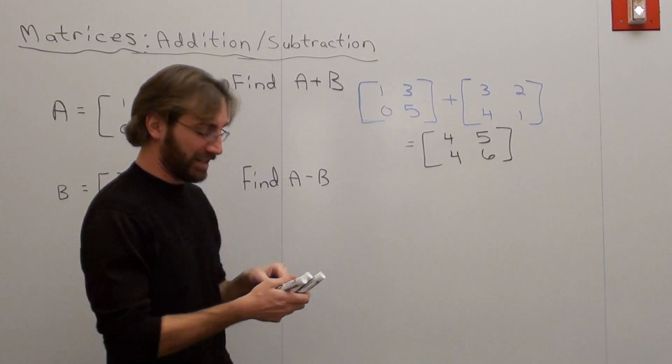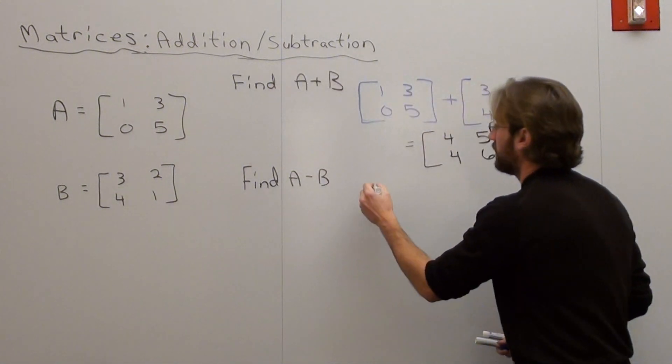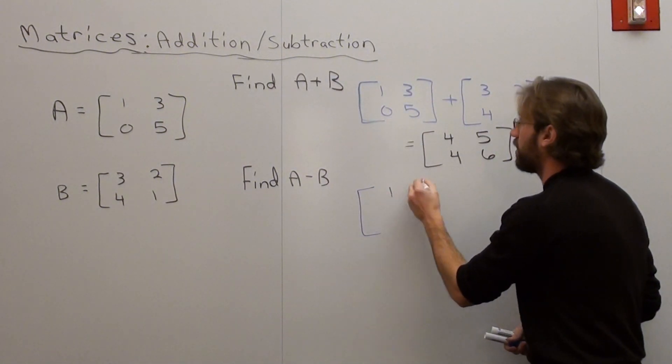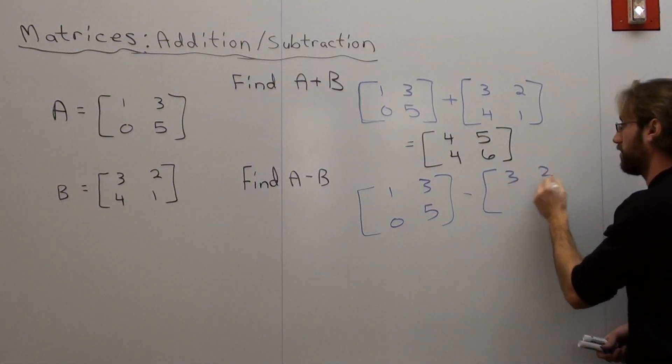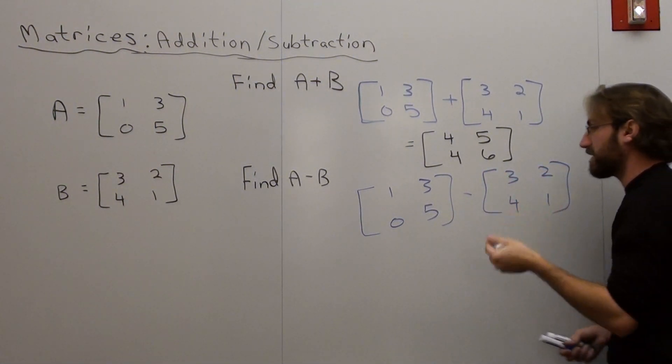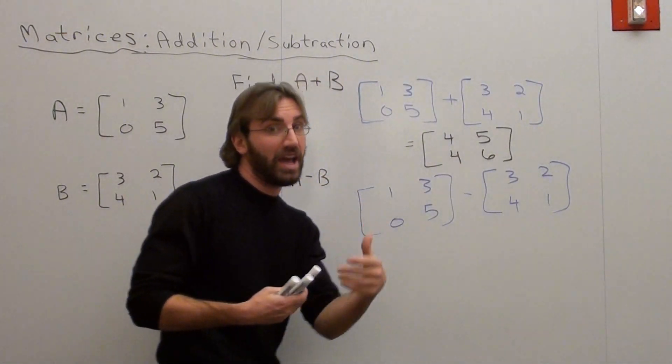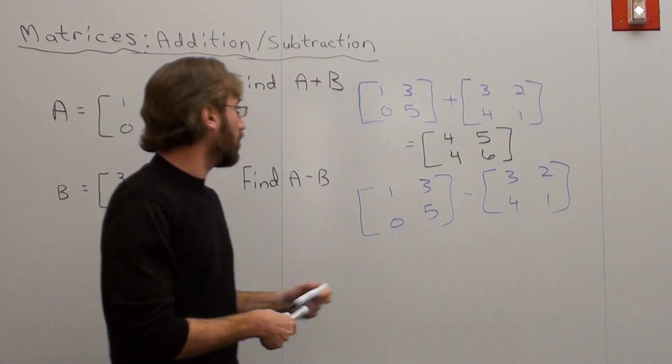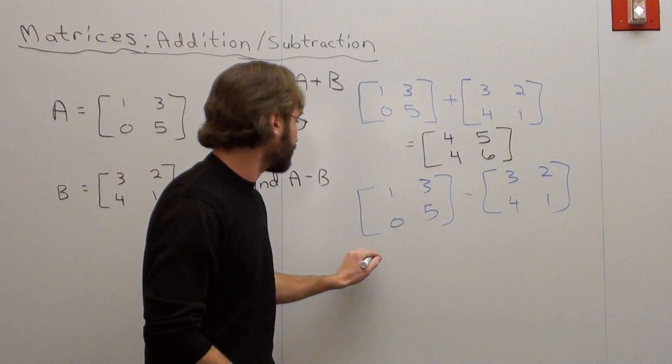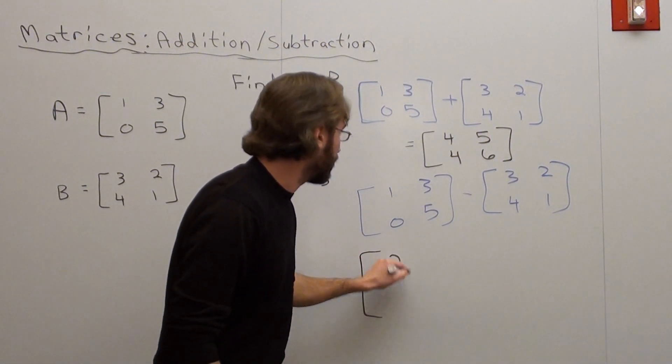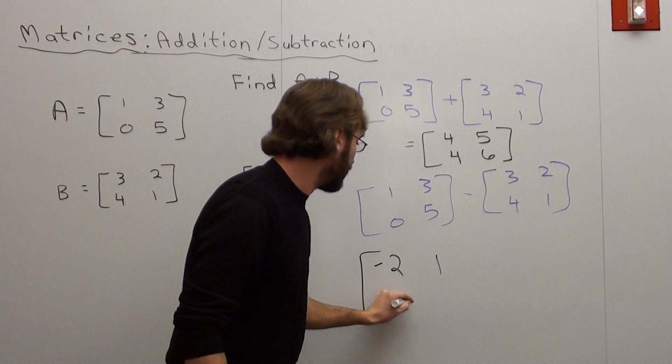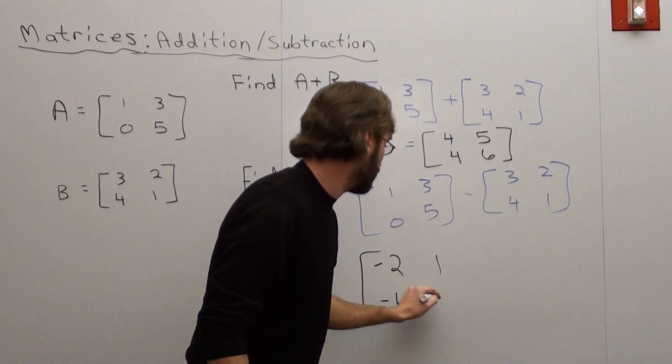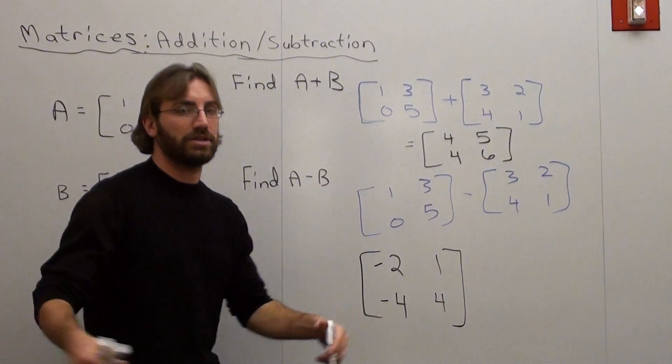Now I want to find A subtract B. So I'm going to take 1, 3, 0, 5, subtracted 3, 2, 4, 1. Very similar to how you did the last problem, but instead of adding them, you're subtracting them. So, 1 subtract 3, negative 2. 3 subtract 2, 1. 0 subtract 4, negative 4. 5 subtract 1, 4. That's the answer.